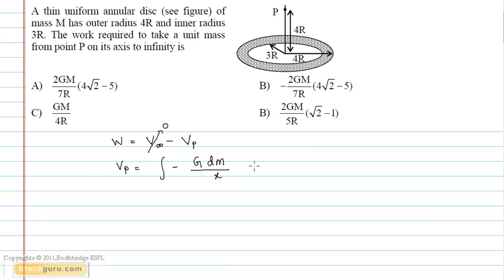This can also be written as integral of minus g sigma dA upon x, where dA is the area element and sigma is the mass per unit area. Clearly, for this question, sigma is equal to capital M upon pi 4R whole square minus pi 3R whole square.